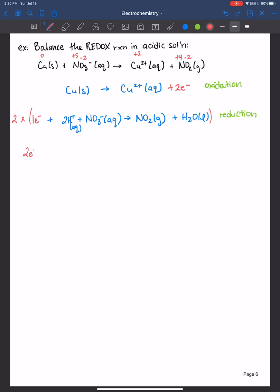So let's write down the new equation. Let me multiply by two. So we have two electrons, plus four H+ ions, plus two nitrate, to give us two nitrogen dioxide plus two water.